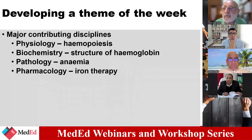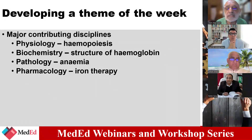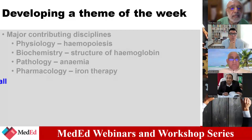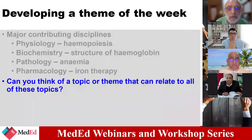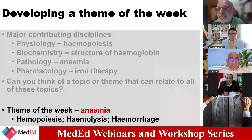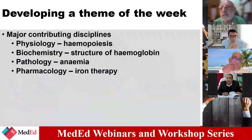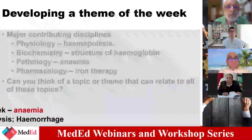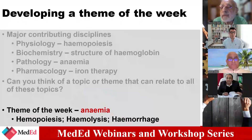Now just think — which theme or topic can connect all these four areas: hemopoiesis, structure of hemoglobin, anemia, and iron therapy? What comes from? Iron deficiency anemia. Basically it is anemia. So the theme would be anemia. This is how we arrive at it — we look at those topics and find which clinical condition can combine or connect all those topics. And then based on this, we came up with the theme of anemia.